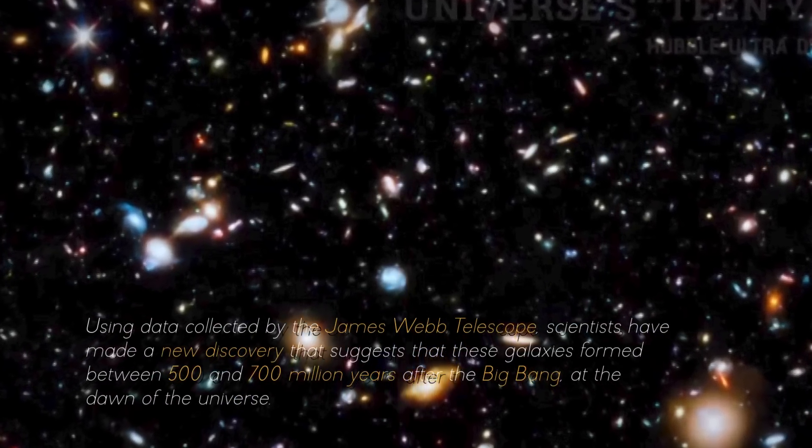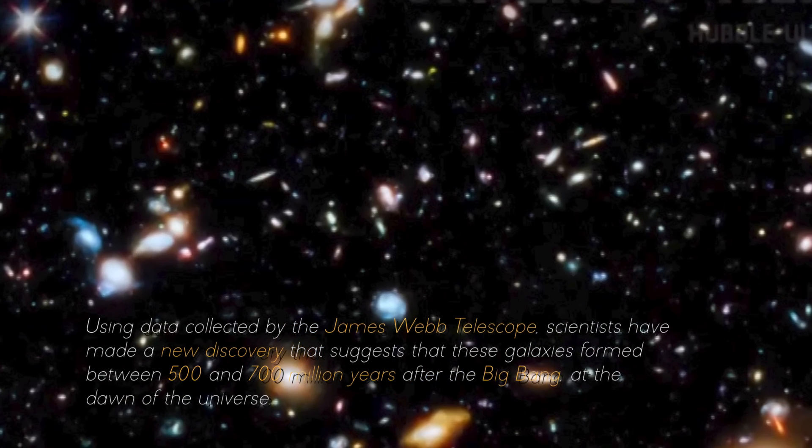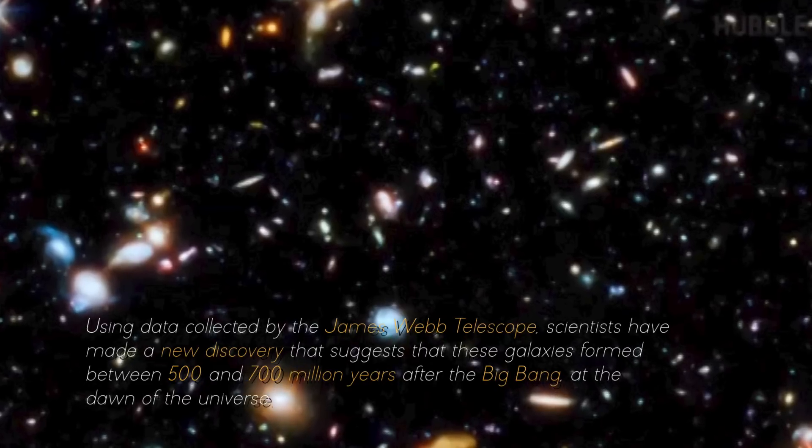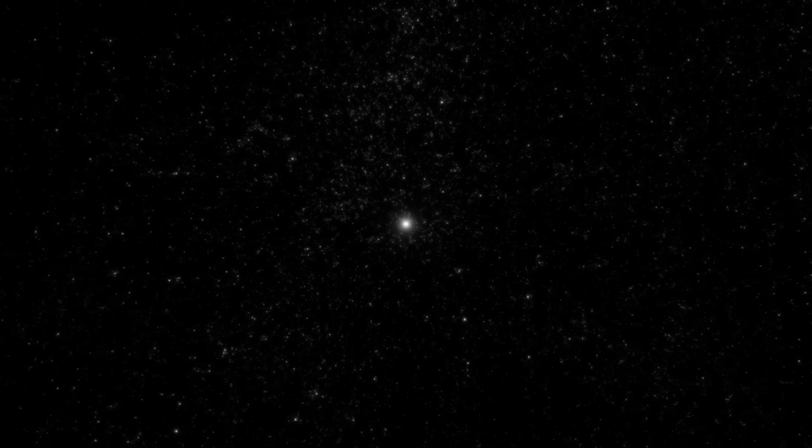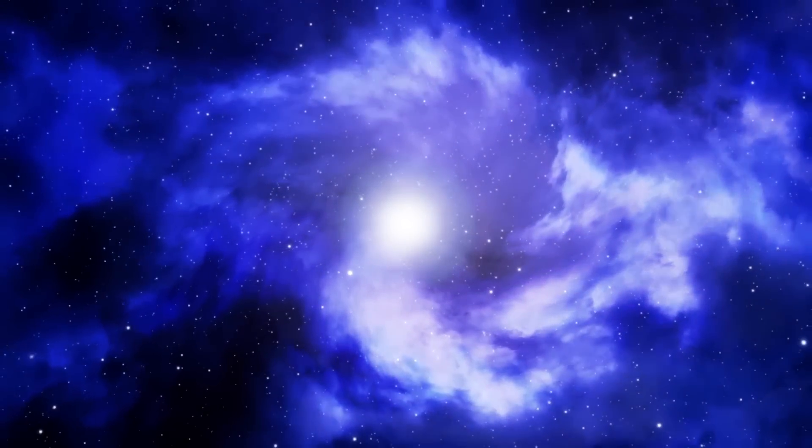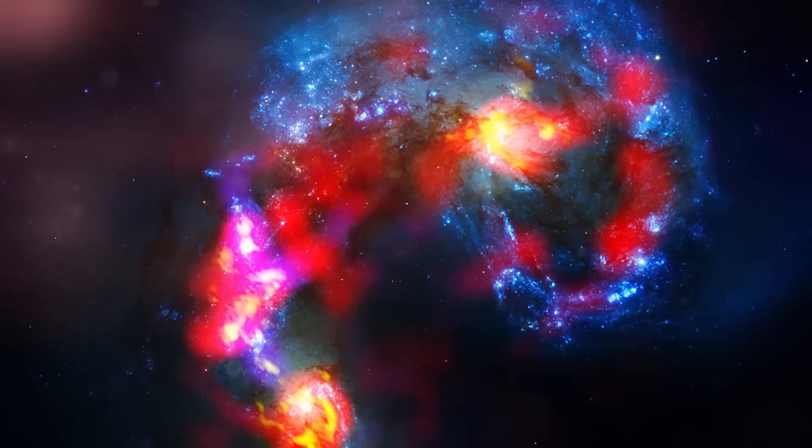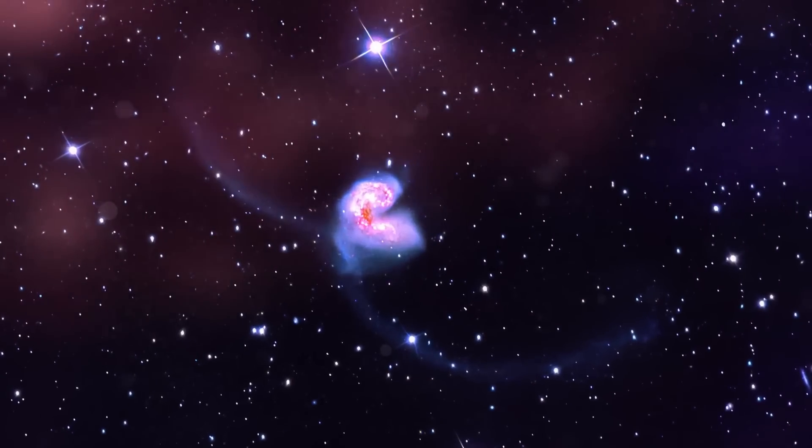Using data collected by the James Webb Space Telescope, scientists have made a new discovery suggesting that these galaxies formed between 500 and 700 million years after the Big Bang, at the dawn of the universe. To understand this coherently, we must keep in mind that the universe is approximately 13.8 billion years old. The light emanating from these ancient galaxies provided completely new information about the nature of the universe. This light reveals a direct link to the dawn of the cosmos, and the evidence allows us to estimate when these galaxies formed.